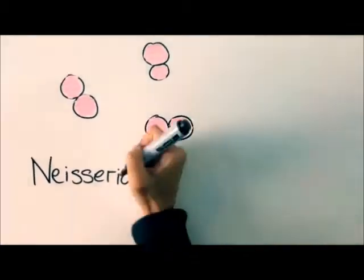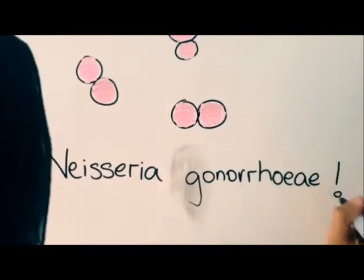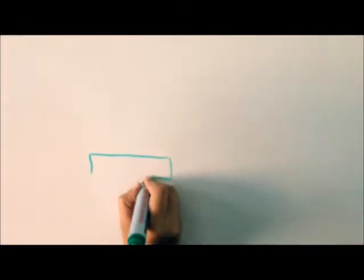This is a gram-negative diplococci and it means that it appears as a pink stain under the microscope. Its microscopic morphology displays it as two cocci joined together.